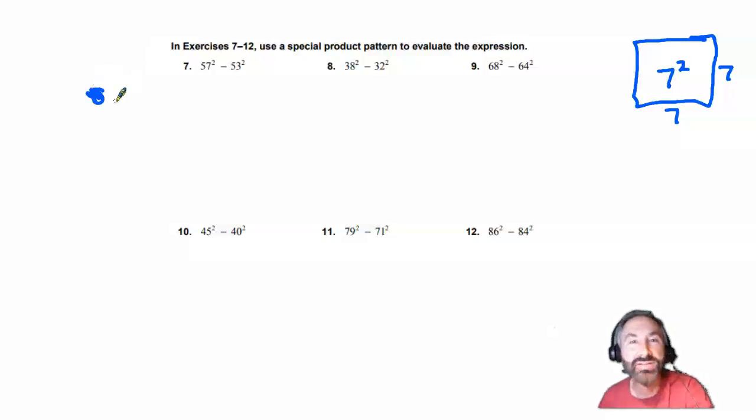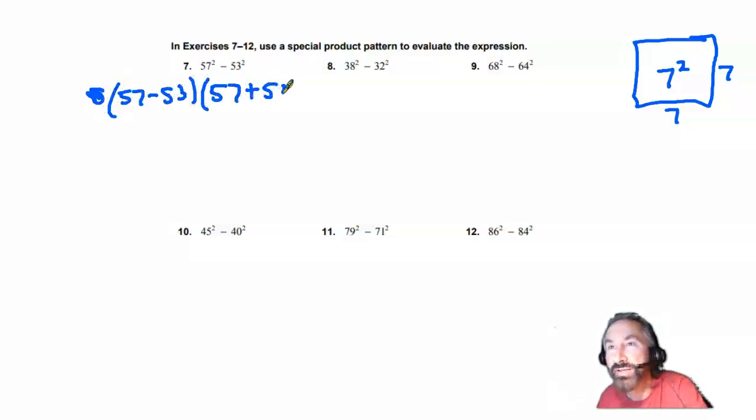It's actually kind of a neat little mathematical trick. You take 57 minus 53. If you factor this properly, and 57 plus 53. And this is another way to write out 57 squared minus 53 squared.